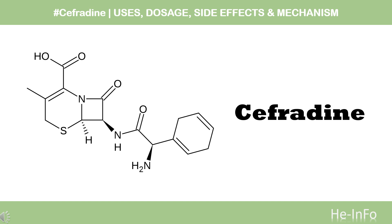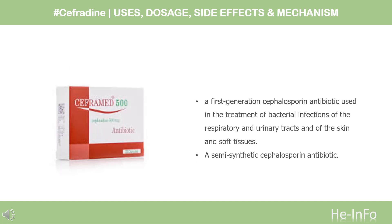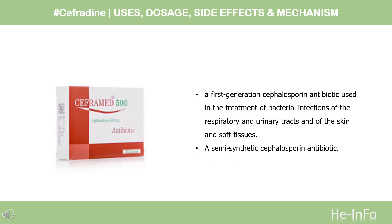In this video, we will cover: What is Cephradine? What is Cephradine used for? Contraindications. What are the side effects of taking Cephradine? How does Cephradine work? And how to use Cephradine? Cephradine is a first-generation cephalosporin antibiotic used in the treatment of bacterial infections of the respiratory and urinary tracts, and of the skin and soft tissues. It is a semisynthetic cephalosporin antibiotic.